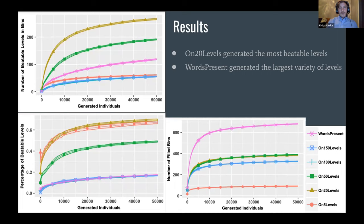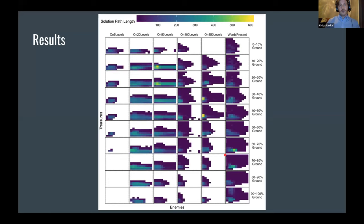So to go over the results, the On-20 levels GAN generated the most beatable levels. Not only did they have the highest number of beatable levels in each bin, they had the highest percentage of beatable levels overall as well. And additionally, although the words present GAN did not perform well in generating beatable levels, it did generate the largest variety of levels as we see by this curve right here on this plot.